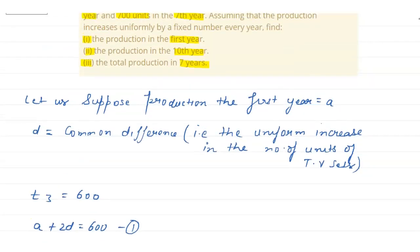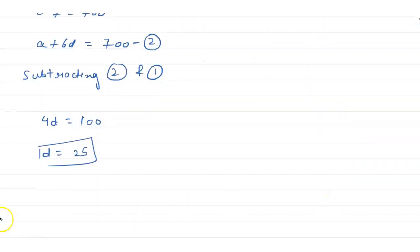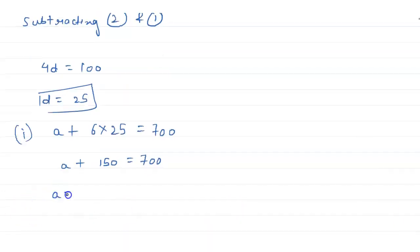Now the first part is the production in the first year. So we have to find a. Put the value of d in equation number 2. So we will get a plus 6 into 25 equals to 700. So a plus 150 equals 700. The value of a will be equals to 550.